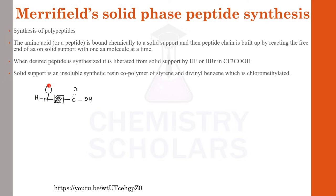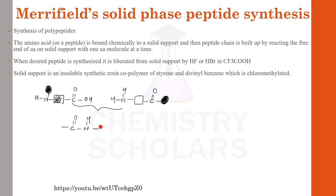We take another amino acid and block its other functional group. The free ends of the two amino acids react with each other to give the first peptide chain. The blocked part is attached to the resin, which is the solid phase to which the amino group is attached.